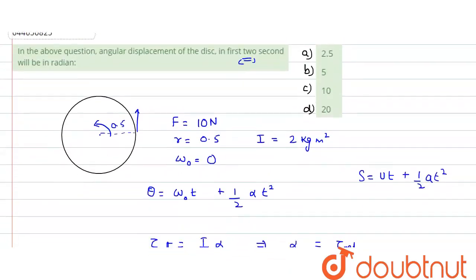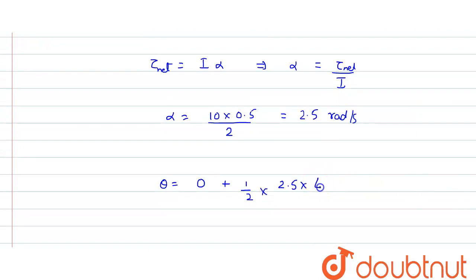So if we solve this, what would be our answer? It would be 5 radians. So 5 radians is our answer for angular displacement.